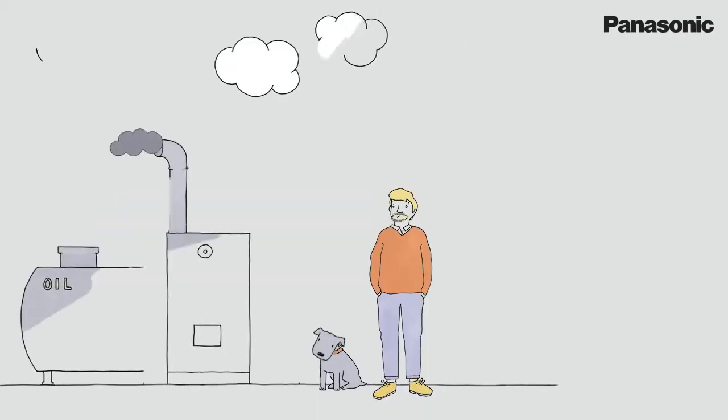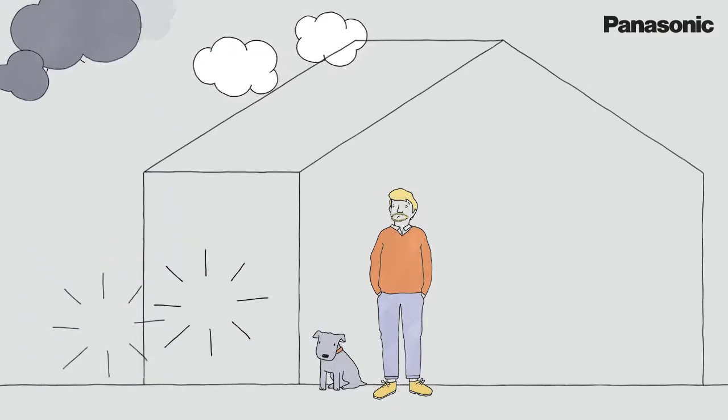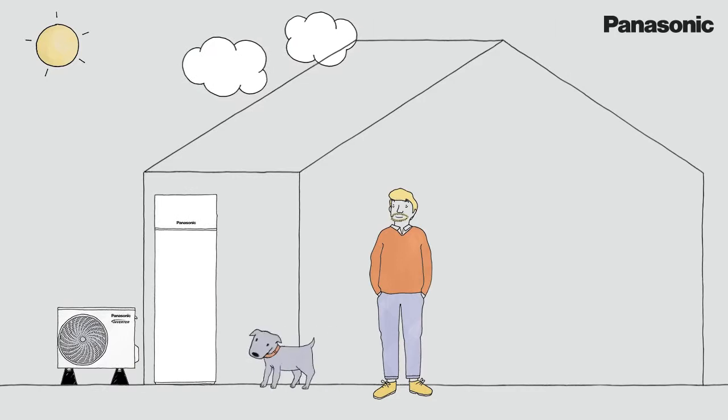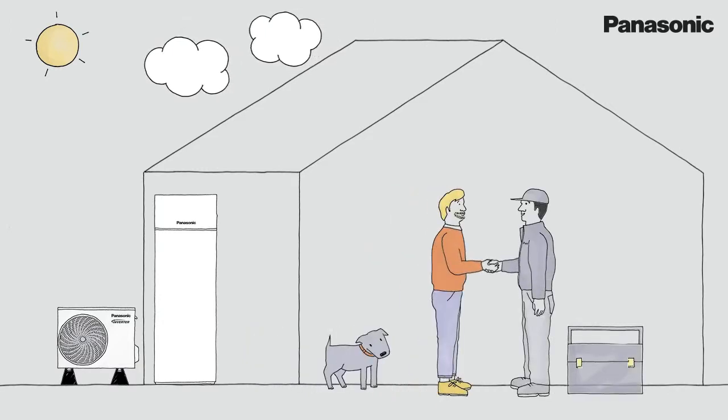Aquaria is ideal for new installations or for replacing existing inefficient central heating systems. Thanks to its smart integrated pipes at the bottom of the unit, installation is quick and easy and comes with no surprises as the installer gets full support from Panasonic when installing.